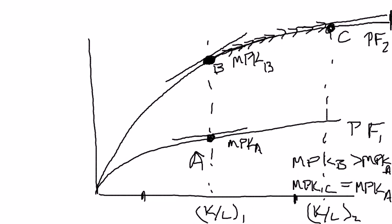So I just wanted to make that point: if you're on two different production functions — one a low one, the other a high one, say due to differences in the level of technology — if you have exactly the same capital-labor ratio, then the marginal product of capital is going to be higher on the higher production function. But on that higher production function, as you accumulate more and more capital goods, the marginal product of capital declines until you reach a point where the marginal product of capital at point C is exactly equal to the marginal product of capital at point A.